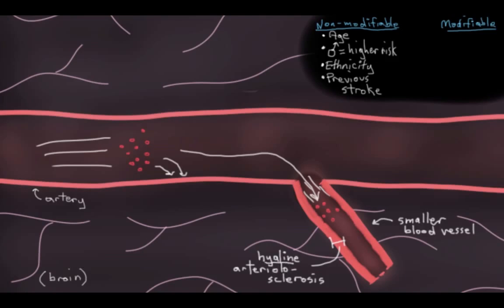Hyaline just refers to how a cross-section of the vessel would look under a microscope. It looks kind of glassy, and hyaline is derived from the Greek word for something that's glassy or crystal-like. Arteriolo just refers to the fact that it's happening in a smaller artery, so an arteriole. And sclerosis just refers to hardening, so hyaline arteriolosclerosis.